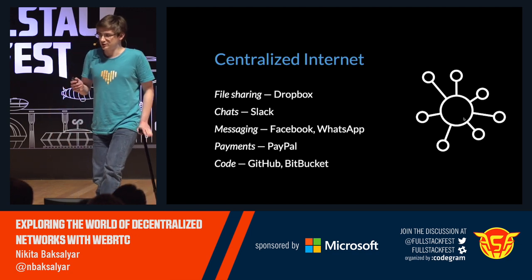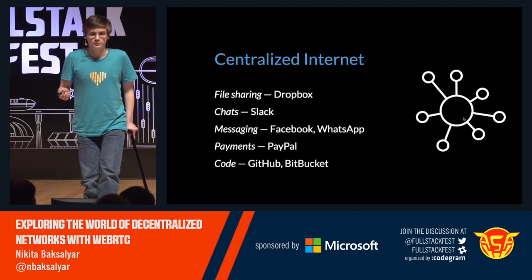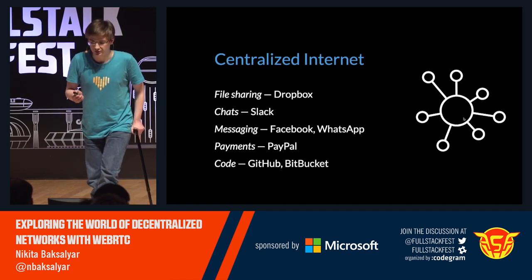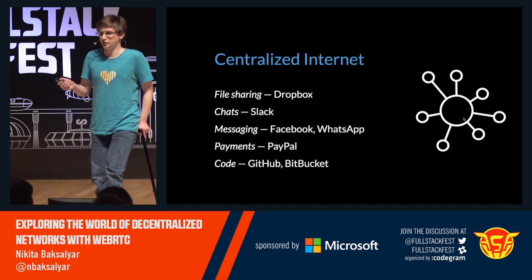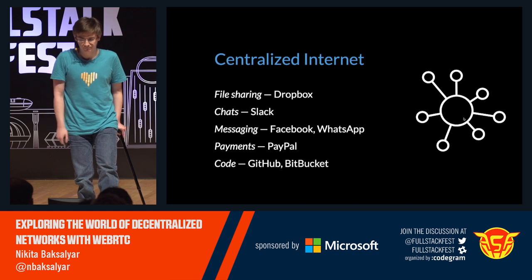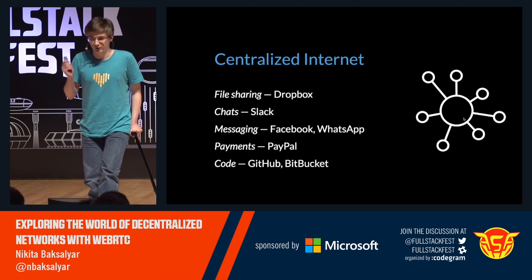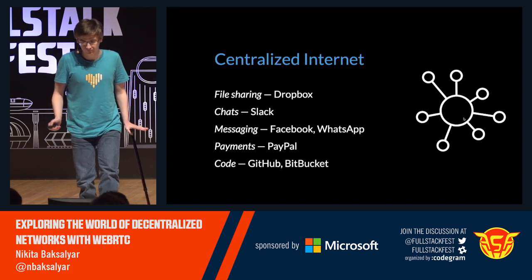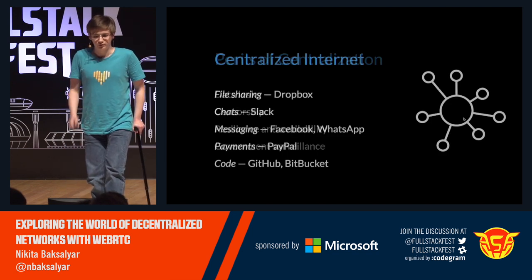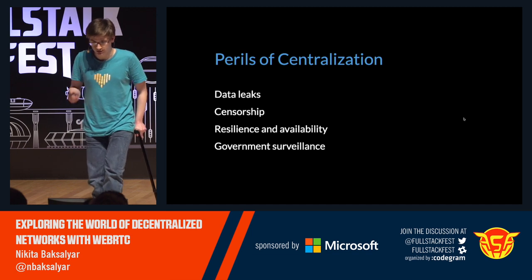The internet landscape has changed drastically. Now we depend on centralized services to do everyday things. We upload our files to Dropbox to share them. We chat on Facebook. We chat on WhatsApp. We pay with PayPal. These services are great — they're easy to use, and this approach helped bring billions of new users to the internet and will help bring many more. But at the same time, this approach has a downside. It makes it far easier for governments to track all your communications and snoop without many hurdles.